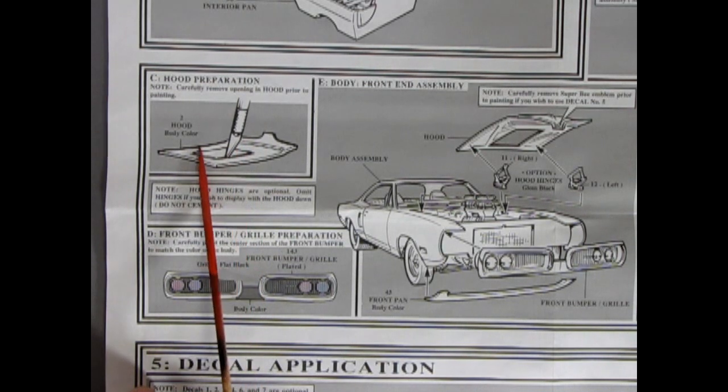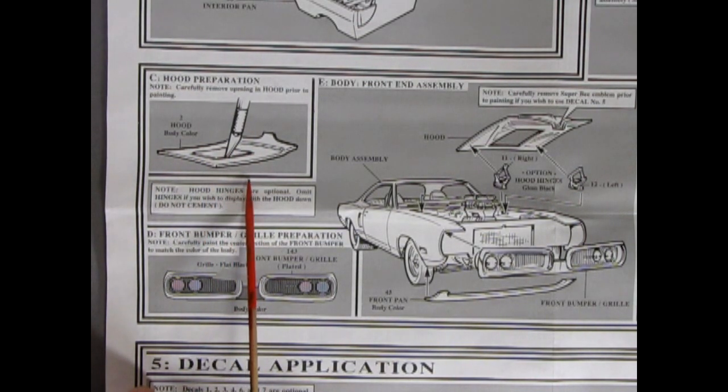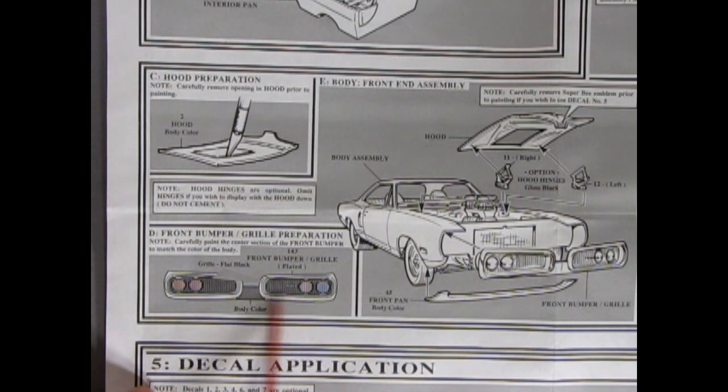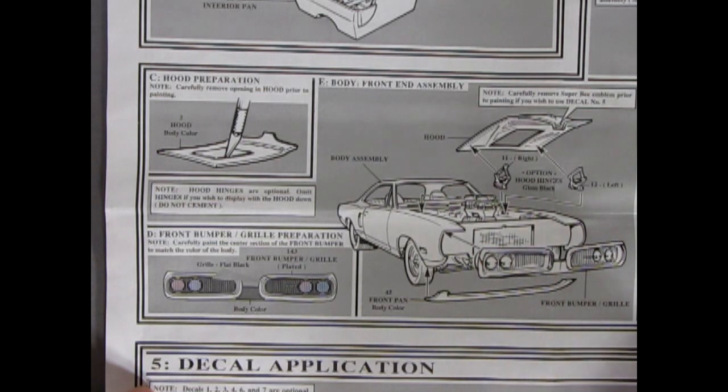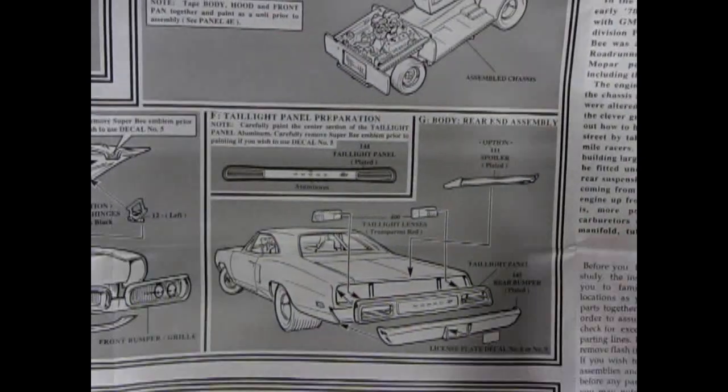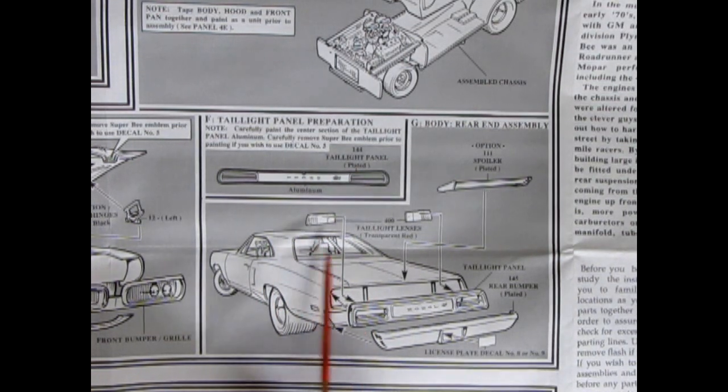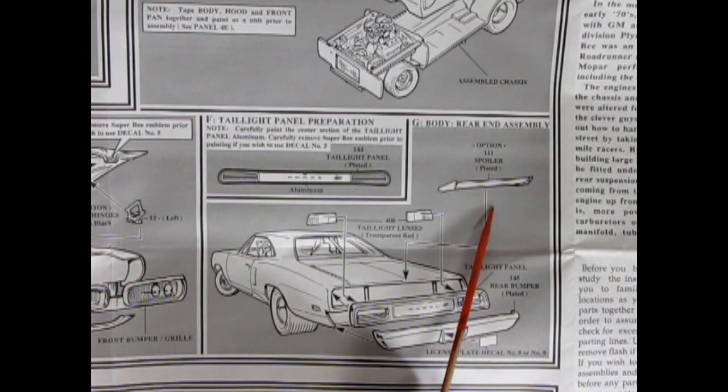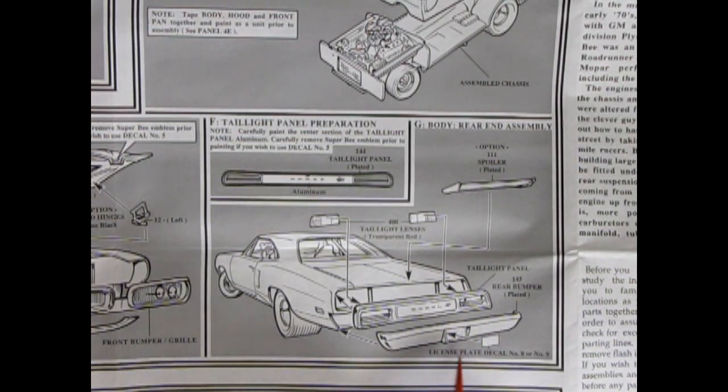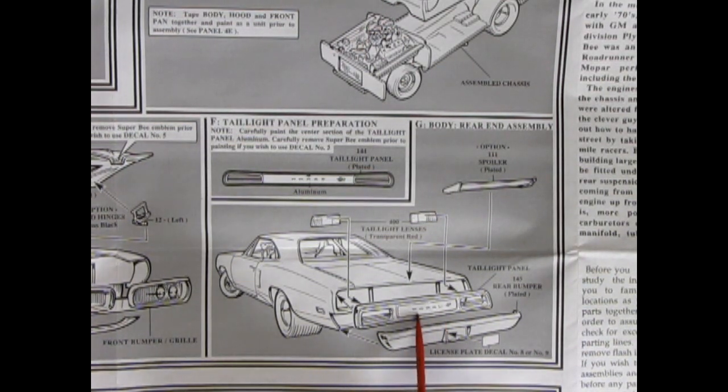So here we go with our hood preparation. And you'll want to chop open that big hole to allow that big blower to pop through with your carburetors. Note hood hinges are optional. Omit hinges if you wish to display with the hood down. Do not cement. There's our front grille and bumper. And you're going to paint the center here body color but you're going to add in some nice black wash in here to bring it all up. And then there's our hood going on in your optional hood hinges to keep that hood up. There's your front grille and bumper pops in the front and the pan goes underneath. And now let's do the slide. The slide. Do the slide. Okay we got our taillight panels right in here. You're going to add in your rear red taillights. Pop in from behind. There's an optional spoiler. That was that aluminum one we saw in the box. And then you got your great rear bumper and your license plate decals going to pop right in there. And here you can paint it black and have dodge up in silver.